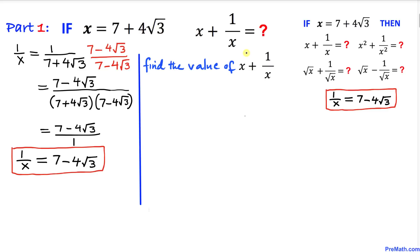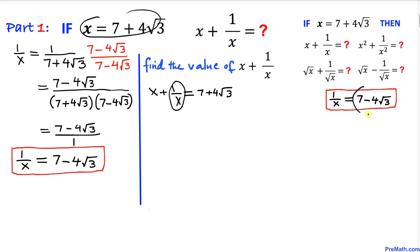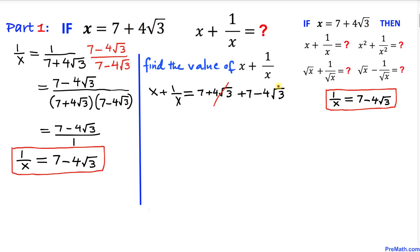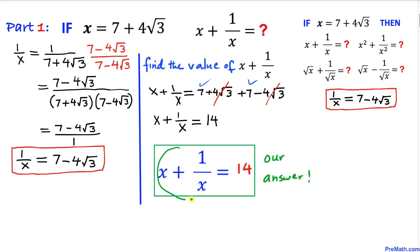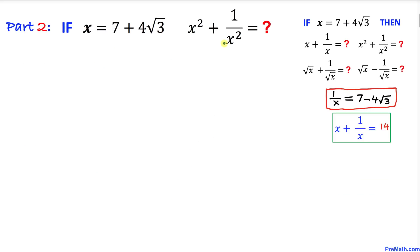Now we calculate x plus 1 over x. We know x is 7 plus 4 times square root of 3, and 1 over x is 7 minus 4 times square root of 3. Adding them together, the radical terms cancel each other out, and 7 plus 7 gives us 14. So x plus 1 over x equals 14.